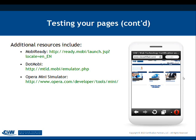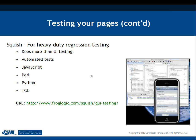I'm currently using the Dolphin web browser — a terrific browser for Android devices, available at the Marketplace or Google Play. For more heavy-duty testing, Squish is an application for regression testing that does more than just UI testing — it does automatic testing code in JavaScript, Perl, and Python. You can find it at froglogic.com. And of course, code validation is essential. Validated code doesn't guarantee it will look great in a browser, but it ensures you have valid code and that will have a positive effect on the page.